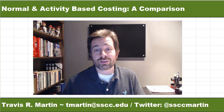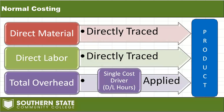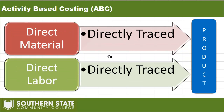If you remember back to our discussion of normal costing, it takes direct material and direct labor and traces them directly to the product. Overhead runs together in one account and then gets applied to a product based on a cost driver — usually just one, and a lot of times that's direct labor hours. The shortcoming is that if we had a manufacturing process that wasn't labor intensive, it would distort our product cost.